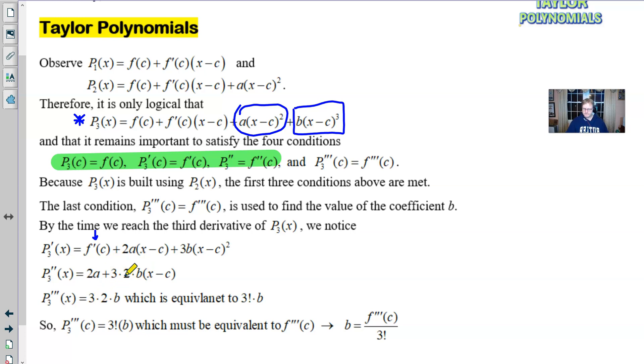From there, we take another derivative. He drops out, 2A, 3B times 2, which is 3 times 2B, X minus C to the first. Let's take a third derivative. 2A drops out. And here we get 3 times 2 times B, which is the constant, which is the same as 3 factorial.